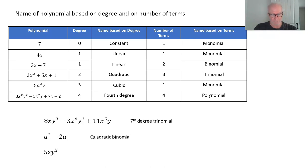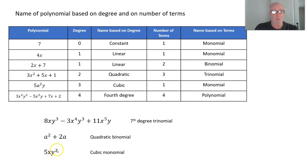And lastly, what about 5xy²? x to the first, y to the second — 1 + 2 = 3. So that's a cubic polynomial, and there's only one term, so that's a monomial.